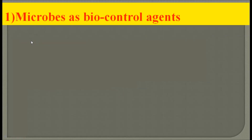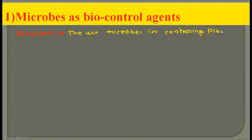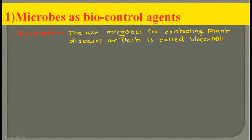First we are going to see microbes as a biocontrol agent. Biocontrol is defined as the use of microbes in controlling plant diseases or pests. When microbes are used for controlling plant diseases or plant pests, such control is called biocontrol.